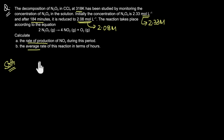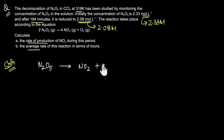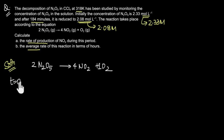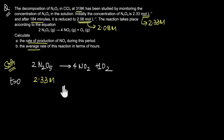So what we have here is N2O5 that decomposes into NO2 and O2 according to this balanced chemical reaction. Now initially, at time t = 0, the concentration of N2O5 is given to be 2.33 molar. Let's assume that no NO2 and O2 has formed yet, so the concentration of NO2 and O2 is 0 molar.